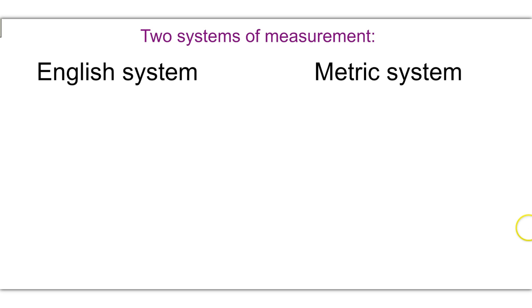So there are two different systems of measurement. There's the English system, and then there's the metric system. In the English system, units of length include mile or feet or yards, whereas in the metric system, units of length may include kilometer, meters, centimeters, millimeters.